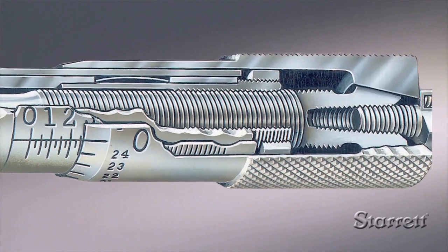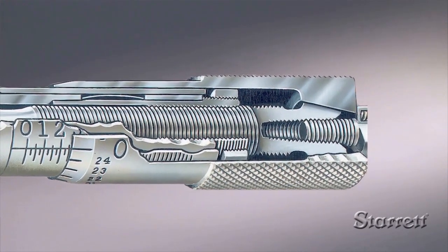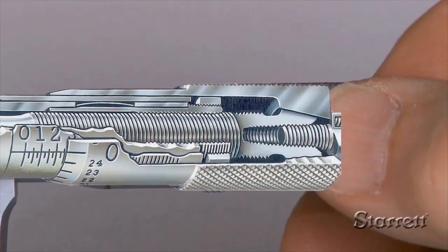The pitch of the spindle screw is 40 threads per inch. Therefore, one revolution of the thimble moves the spindle face 0.025 inches.